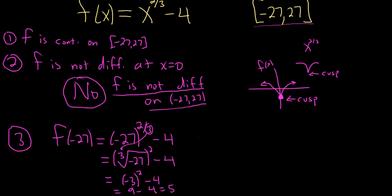Let's do 27. f of 27. Same thing. 27 to the 2 thirds minus 4. Same thing. It's the cube root of 27. Kind of fun showing all the little steps like this. Squared minus 4. Cube root of 27 is 3, so 3 squared minus 4. So 9 minus 4, which is 5. Beautiful.